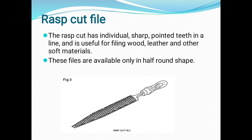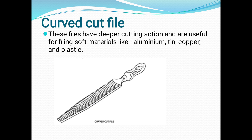The rasp cut has individual sharp and pointed teeth in a line. It is useful for filing wood, leather, and other soft materials. In the rasp cut, a half round shape is formed in the first row of teeth.